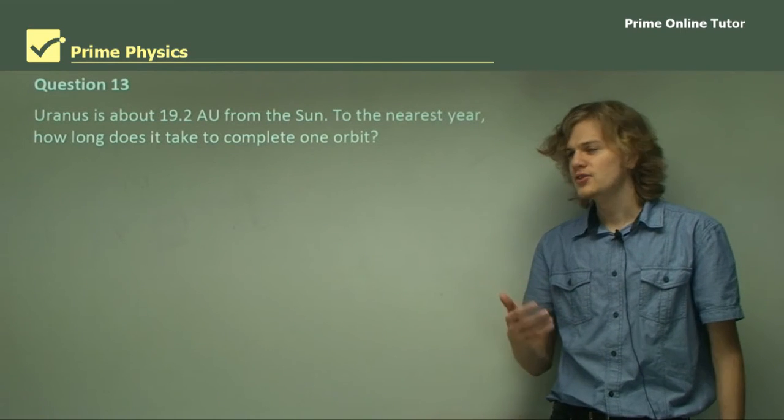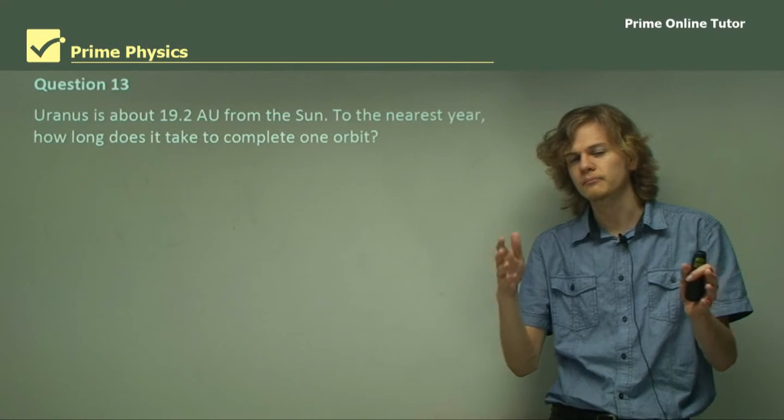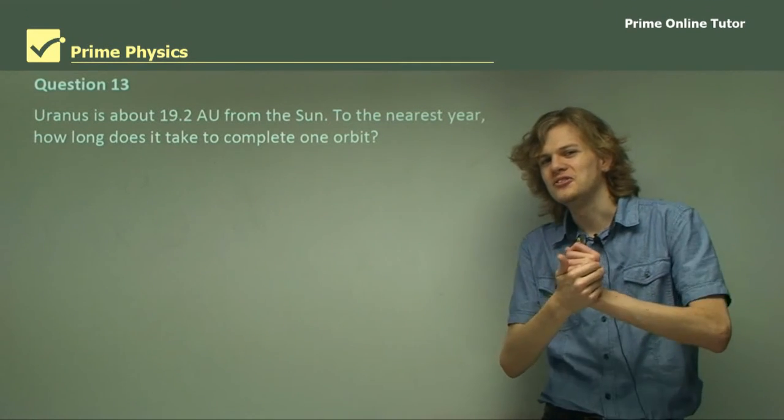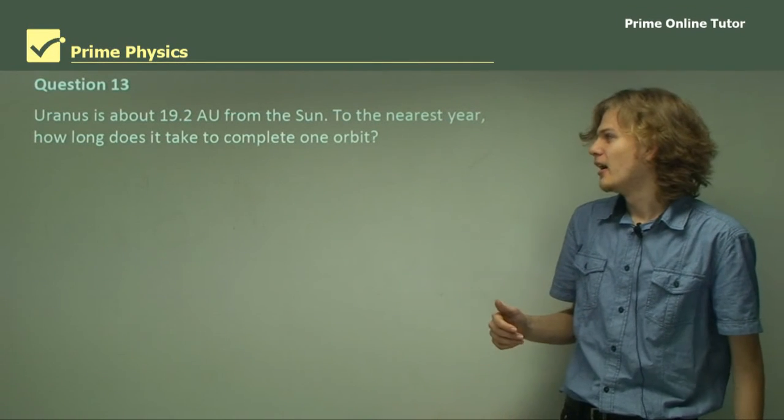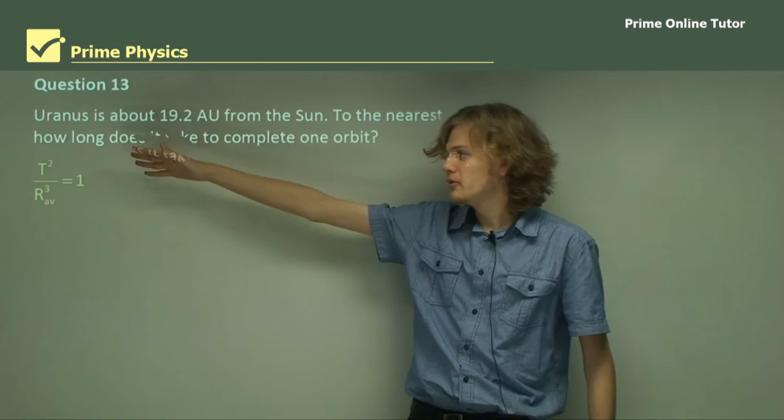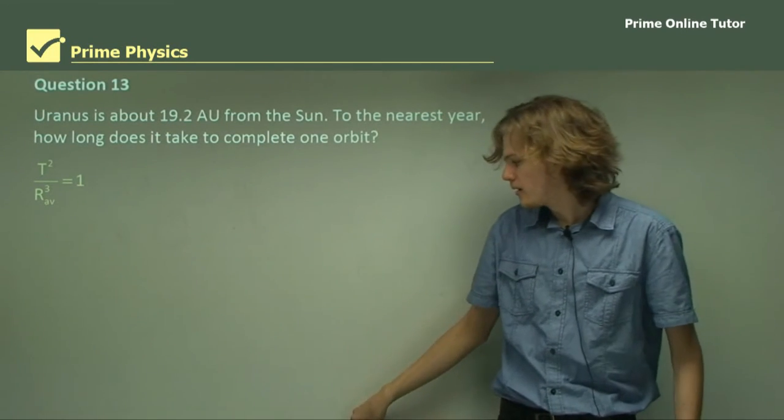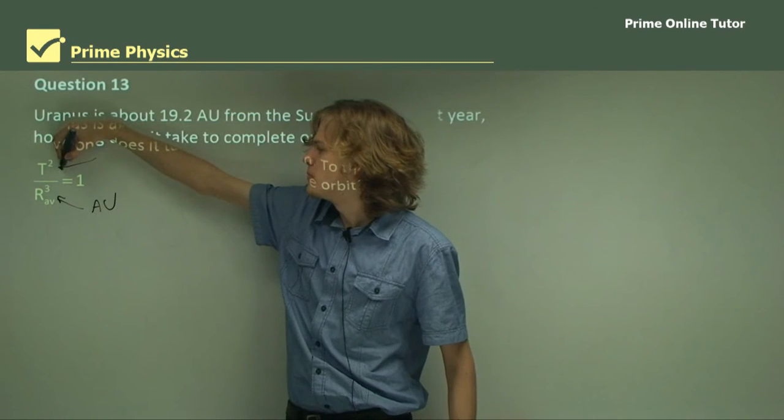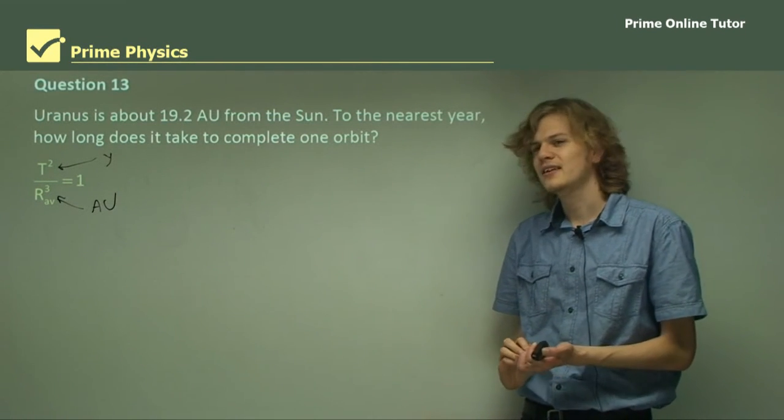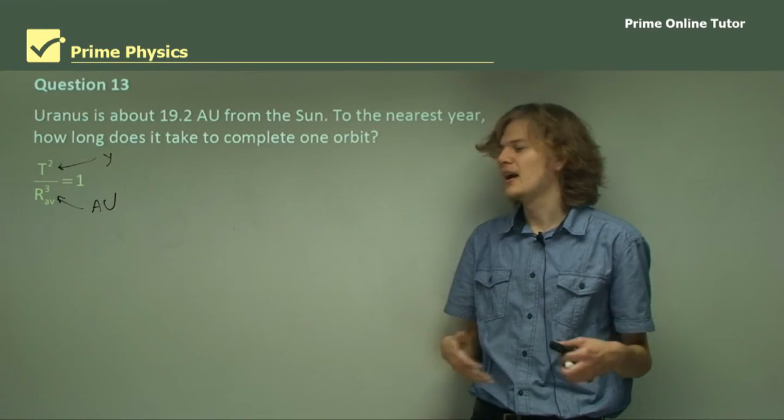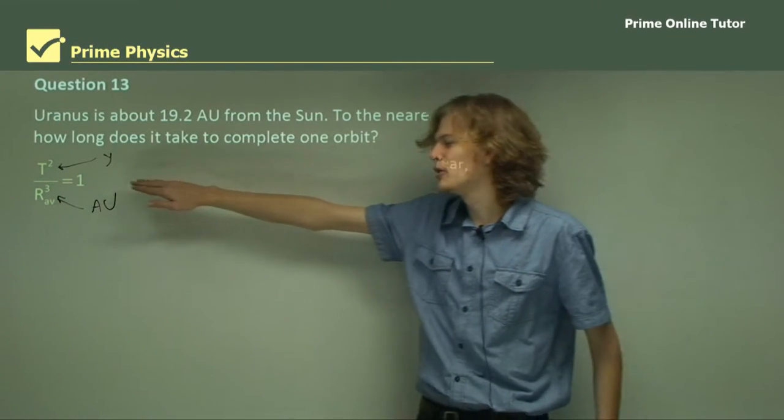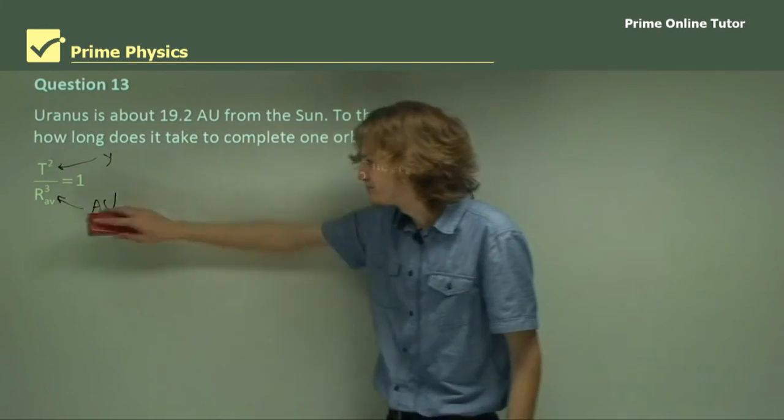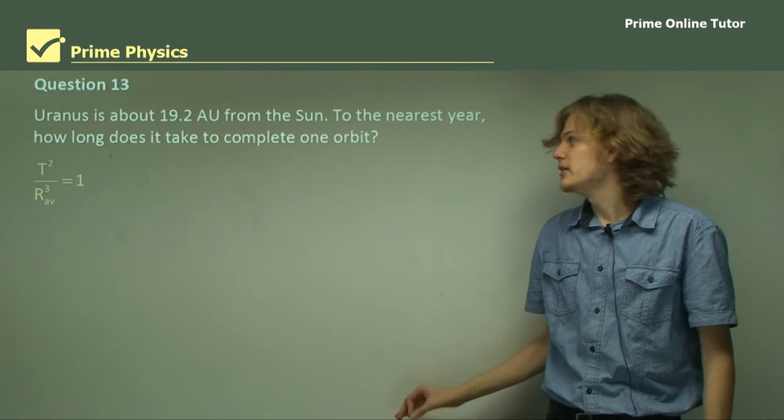Question 13: Uranus is about 19.2 astronomical units from the Sun. To the nearest year, how long does it take to complete an orbit? The relevant equation is Kepler's third law: the period squared over the average radius cubed equals 1. But these aren't SI units. The radius has to be measured in astronomical units, and the period has to be measured in years. If we used seconds and metres, we'd get a very different number, but the law would still hold true. We're using astronomical units and years because it's more convenient.